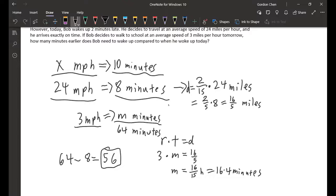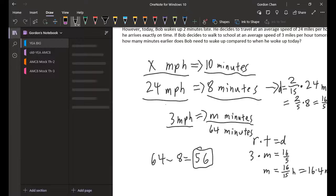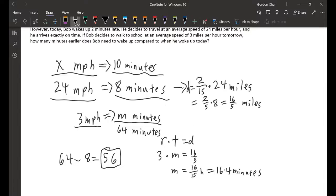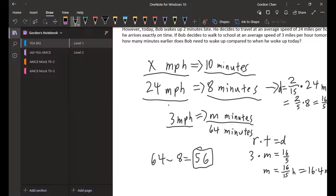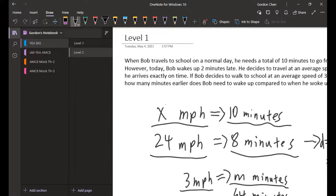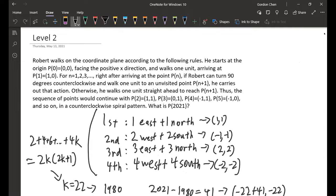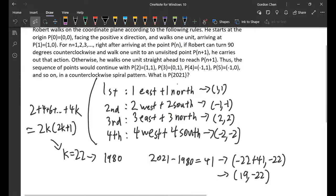When compared to yesterday, which was 8 minutes of travel time, the difference is 56 minutes. So Robert is walking on the coordinate plane and starts at the origin.